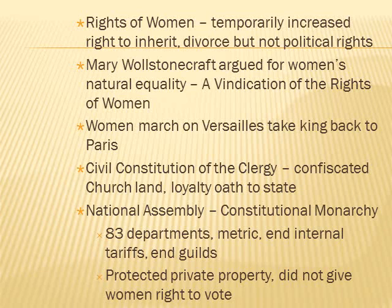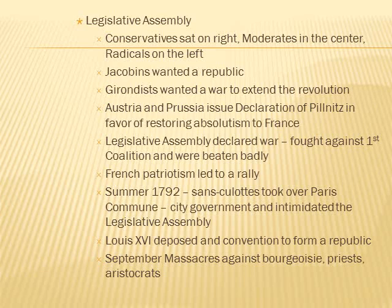The National Assembly tried to protect private property but did not give women the right to vote. The Legislative Assembly had conservatives on the right, moderates in the center, and radicals on the left — which is the origin of the political left-right language. The Jacobins wanted a republic; the Girondins wanted a war to extend the revolution. Austria and Prussia issued a Declaration of Pillnitz in favor of restoring absolutism to France, which alarmed France. The Legislative Assembly declared war. They fought against the first coalition and were beaten badly, but French patriotism led to a rally.